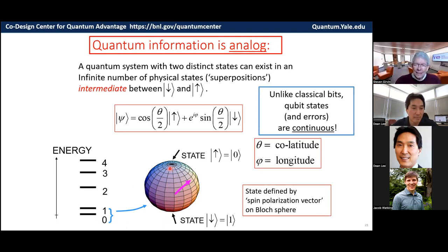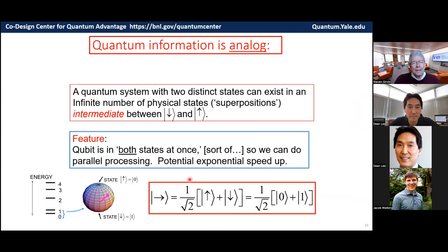So, unlike classical bits, the states here are kind of continuous. I can rotate this arrow around on the sphere continuously on purpose, or noise and other effects from the environment can accidentally turn it continuously, and we're unaware of that. So, both states and errors in those states are continuous.